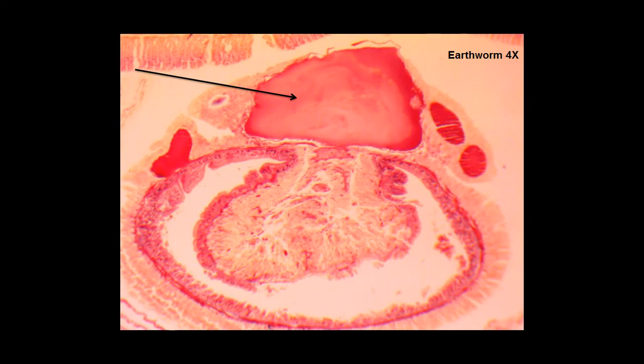Here's a cross-section of the coelom of the earthworm using the 4x objective, which gives a total magnification of 40 times. What we're looking at here is the dorsal blood vessel. This blood vessel lies on top of the intestine and carries blood to the front of the body of the organism.